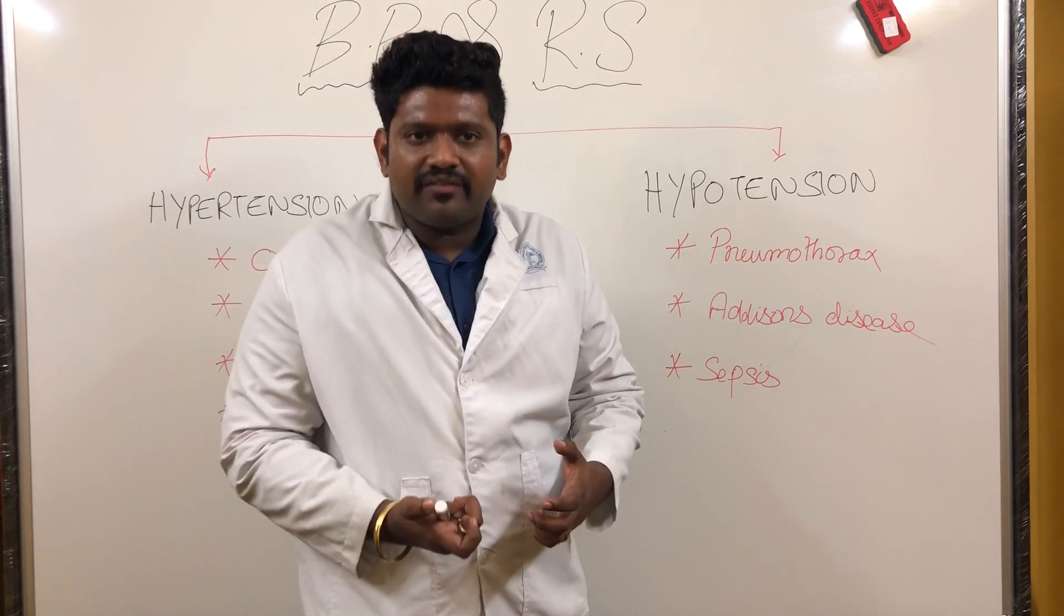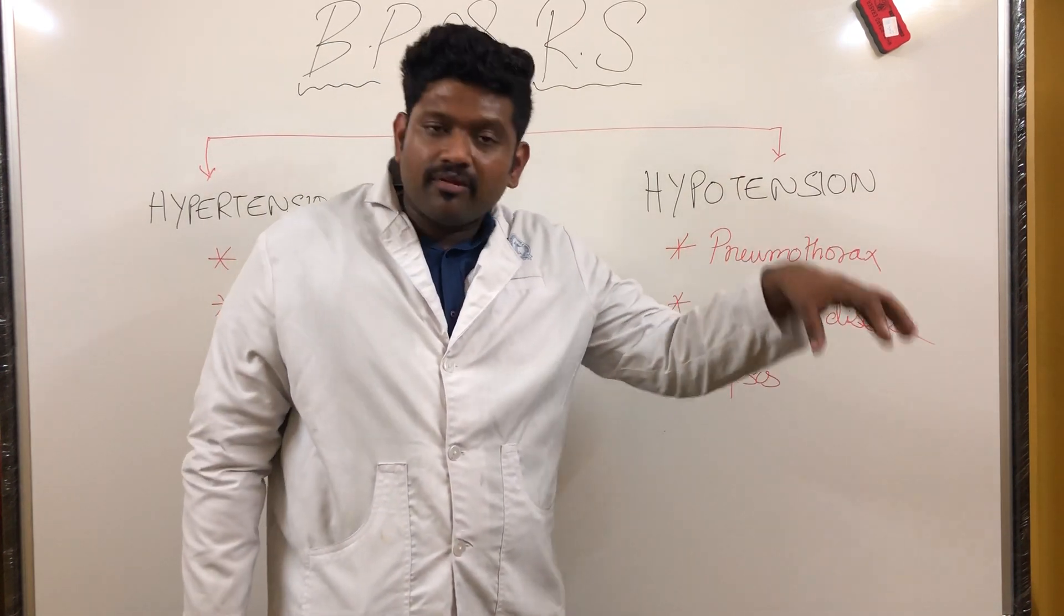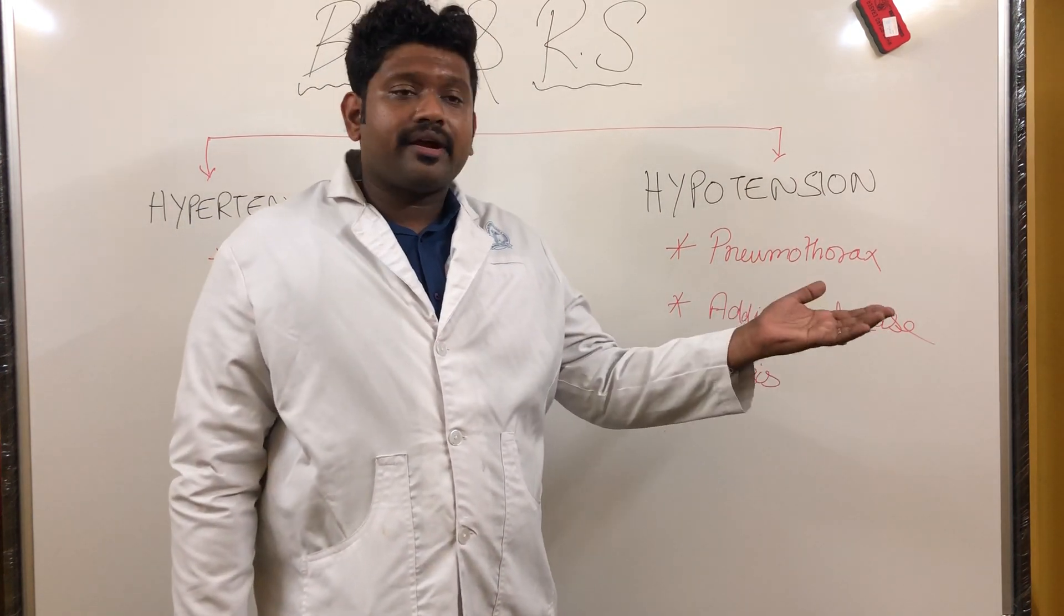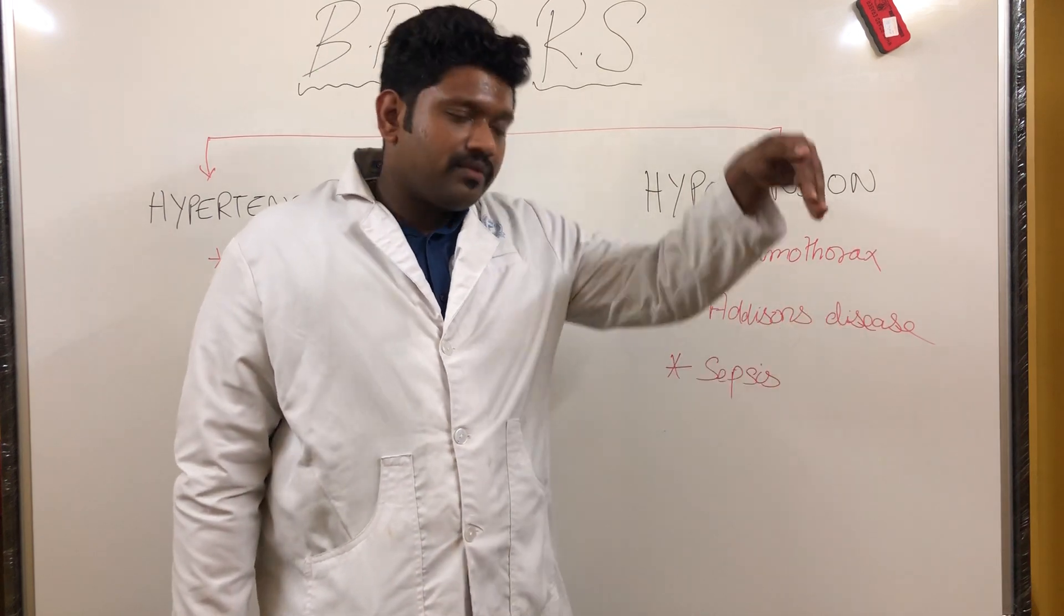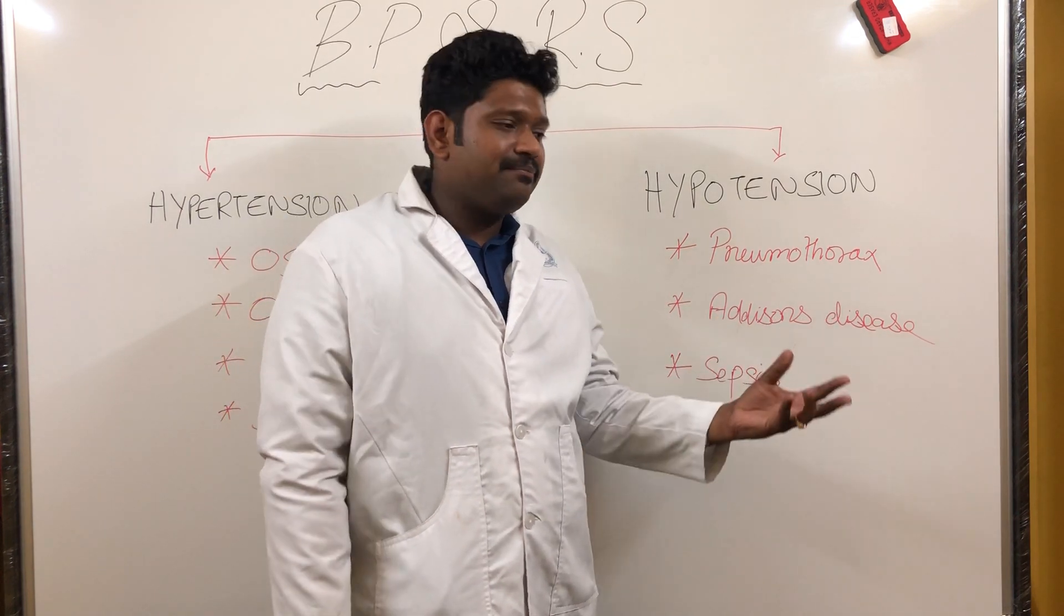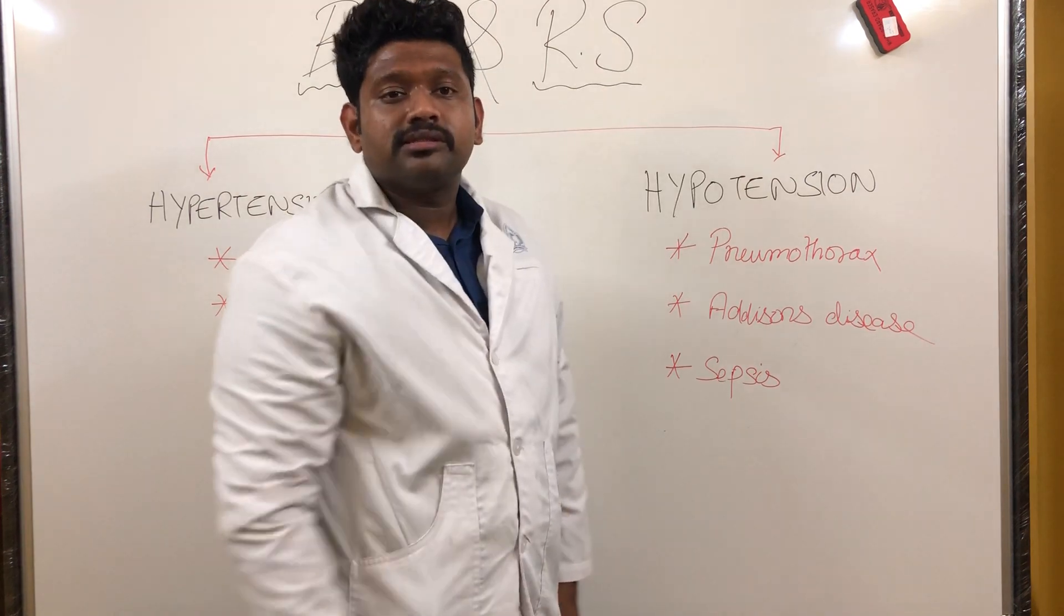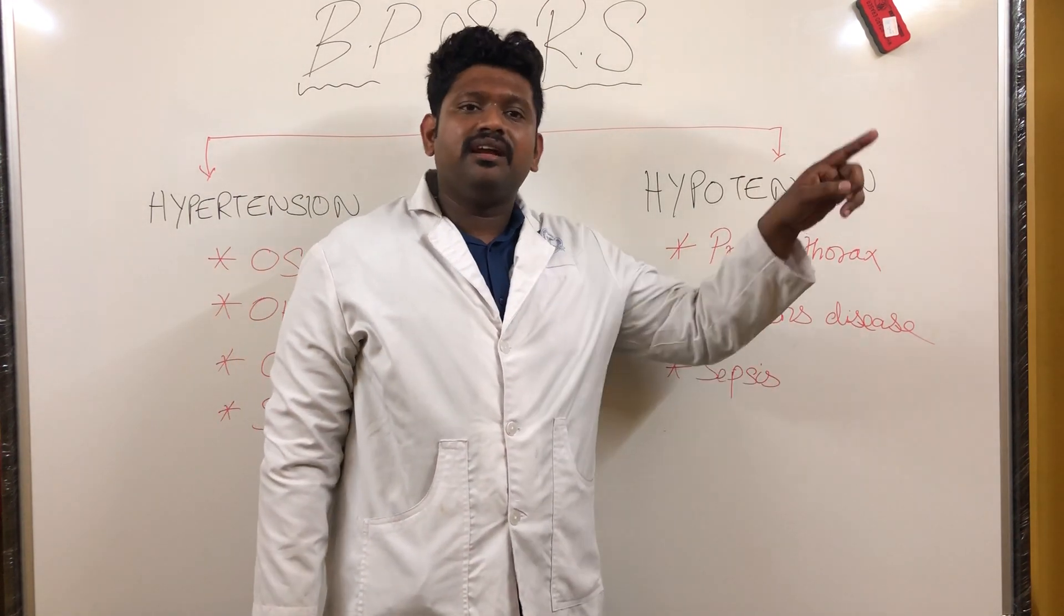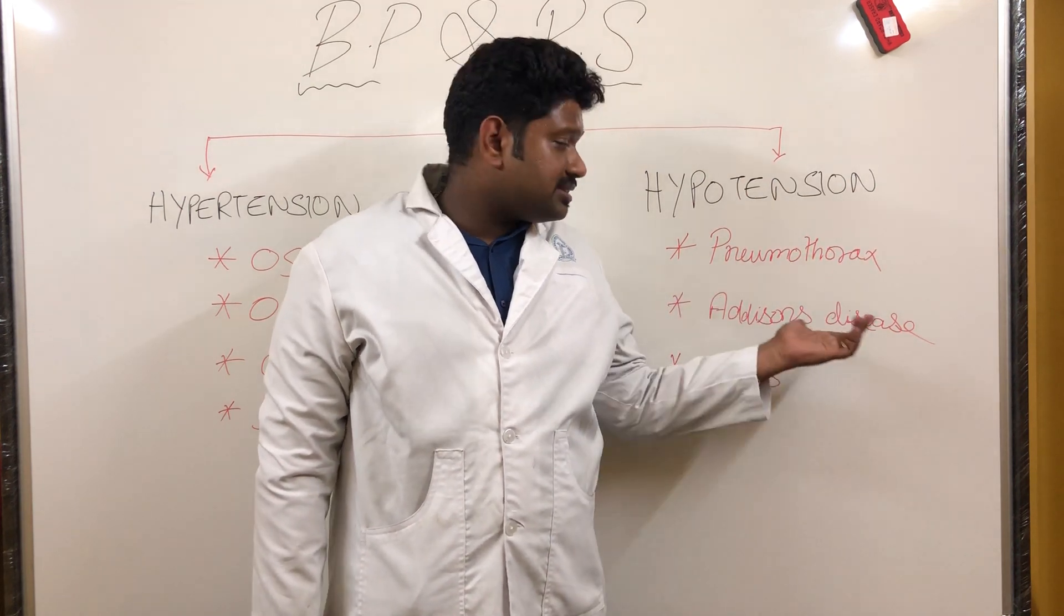When there's hypo-functioning of adrenal glands in Addison's disease, steroid production is less - both glucocorticoid and mineralocorticoid. Mineralocorticoid maintains our BP, so if it's functioning less, BP will fall down. The most common cause of Addison's disease - hypo-functioning of adrenal glands - in India is tuberculosis, whereas worldwide the most common cause is autoimmune.